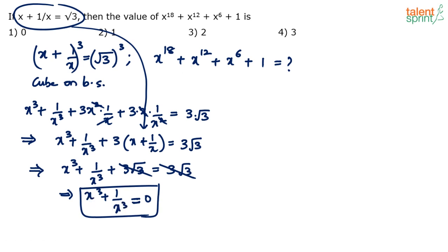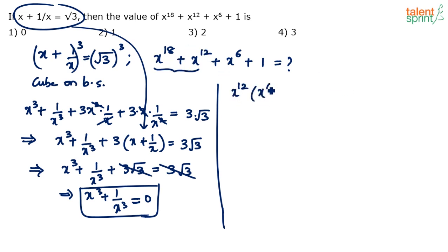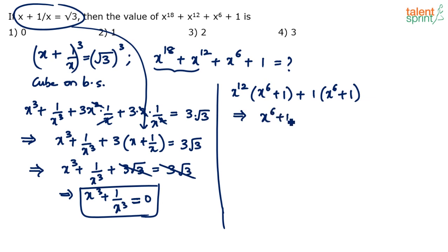Now, having got this, we can simplify the given expression. We need to find x power 18 plus x power 12 plus x power 6 plus 1. Take x power 12 common from the first two terms: x power 12 times (x power 6 plus 1), plus 1 times (x power 6 plus 1). Then take (x power 6 plus 1) common, giving (x power 6 plus 1) times (x power 12 plus 1).